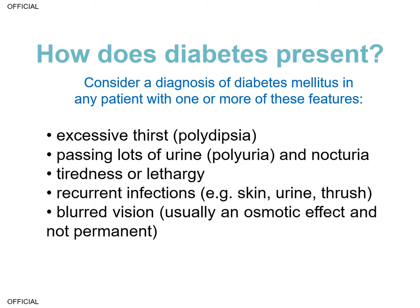When would you think about diabetes, and which type of individual and what sort of presentation would suggest diabetes could be a possibility? The World Health Organization diagnostic criteria highlights that you should consider a diagnosis of diabetes mellitus if someone presents with one or more of the following features: excessive thirst, also known as polydipsia. This is because the high blood glucose quite often makes you thirsty, and that in turn can cause you to pass lots of urine, because lots of glucose in your urine will cause you to pass lots of water as well.